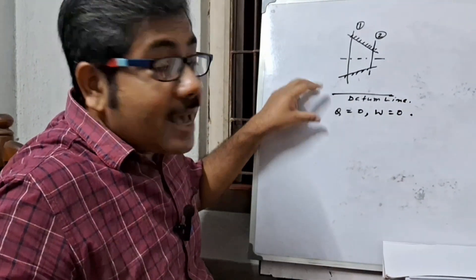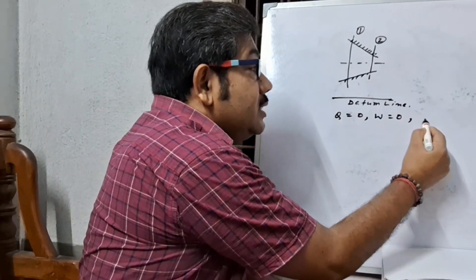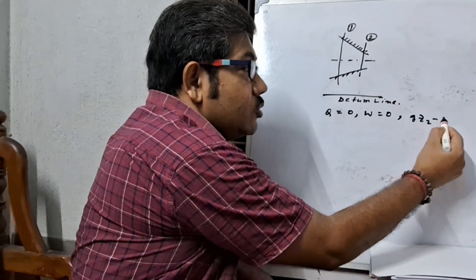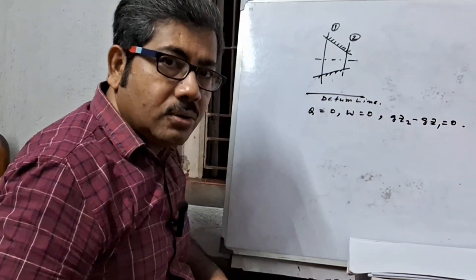And now, as the nozzle is horizontal, the change in potential energy, that means gz2 minus gz1, is equal to 0.